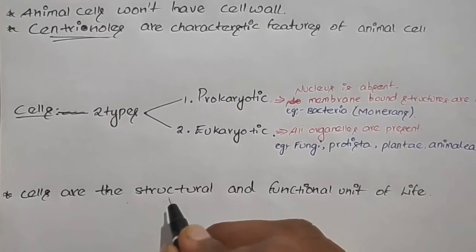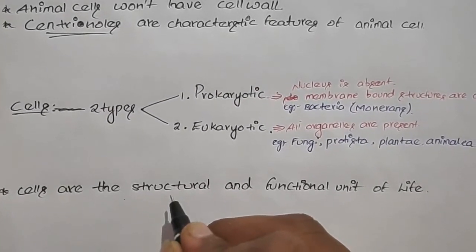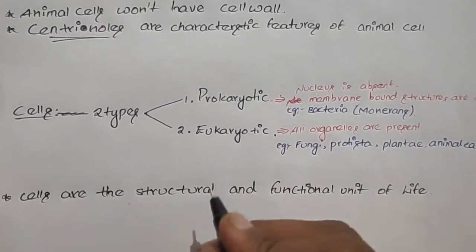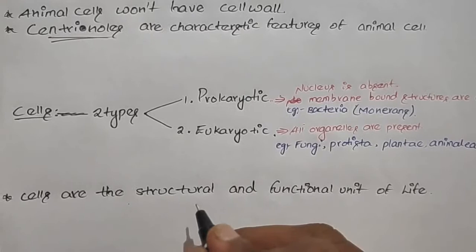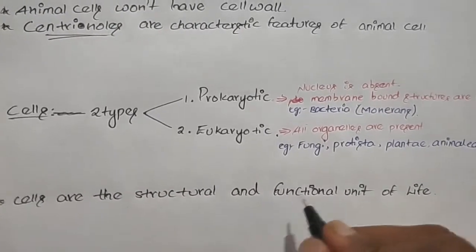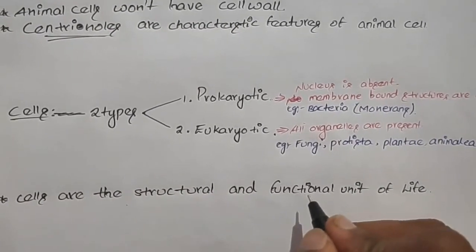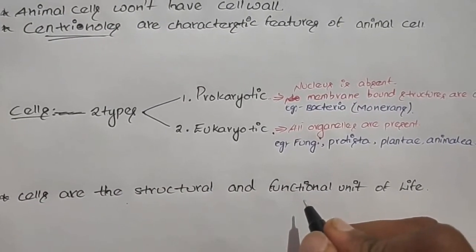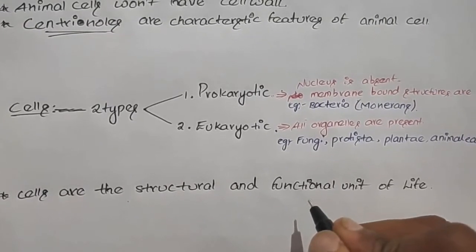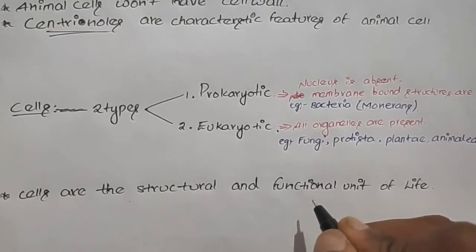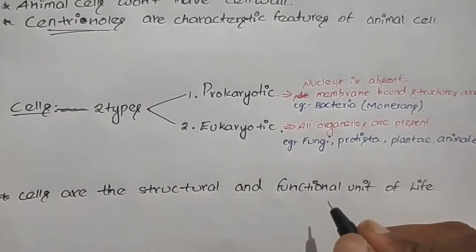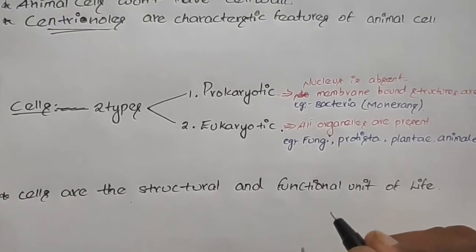Cells are the structural and functional unit of life. Structural means all the body of an organism is made up of cells. Functional unit of life means all the chemical reactions in our body are taking place by the cells. These cells are the reason why we are living today.